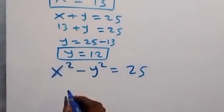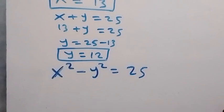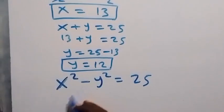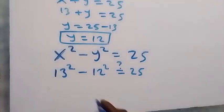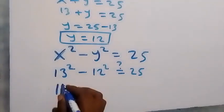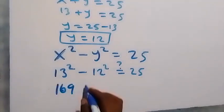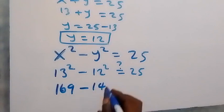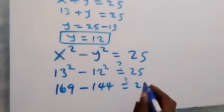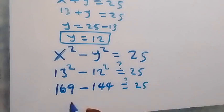x is 13, then y is 12. So 13 square minus 12 square, is it giving us 25 from here? Then 13 square is of course 169, as 13 times 13. Then minus 12 square, 144. Is this equals to 25? When we subtract from here, this is 25 on this side.